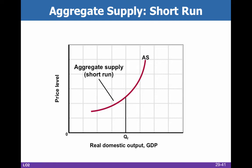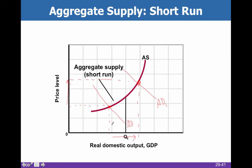In the short run — not the immediate short run — prices can flex, but they typically flex up more than they flex down. When prices rise, you can imagine two different demand curves. In both circumstances, quantity increases and price level increases. As aggregate demand goes from AD to AD1, we're making more stuff, which is good, but we're paying a lot more as well. A lot of the extra money being spent is actually absorbed through increases in the price level rather than just increases in output.